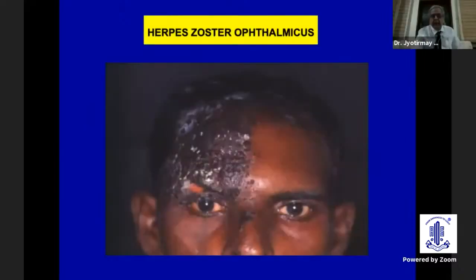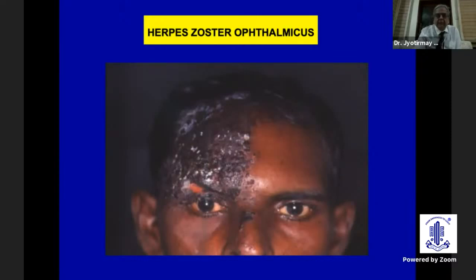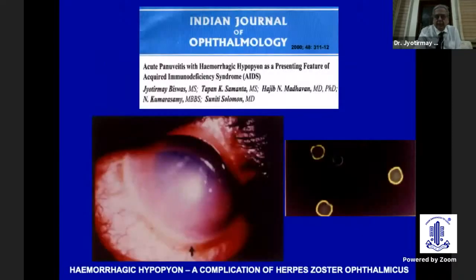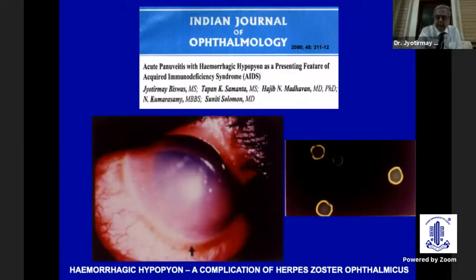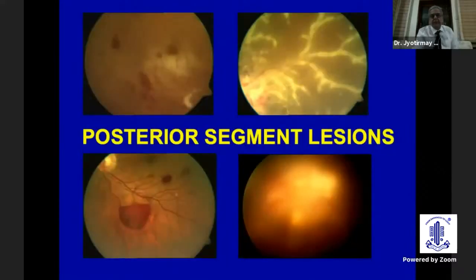What are the anterior segment problems? One of the most common is herpes zoster ophthalmicus — if you see herpes zoster ophthalmicus in young men, always think of HIV and rule out HIV infection. We described a case of acute hemorrhagic hypopyon in a case of HIV-induced uveitis; this patient was immunocompromised, and aspiration from the anterior chamber showed varicella-herpes zoster virus.